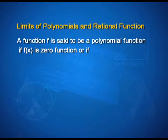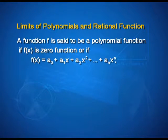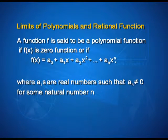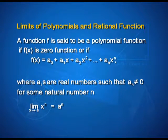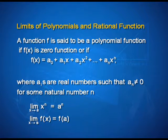Now let us look into the limits of polynomials and rational functions. A function f is said to be a polynomial function if f(x) is the zero function, or if f(x) equals A₀ plus A₁x plus A₂x square plus ... Aₙxⁿ, where Aᵢ's are real numbers such that Aₙ is not equal to 0, for some natural number n. The limit of xⁿ as x tends to a is equal to aⁿ, that is, limit of f(x) as x tends to a is equal to f(a).